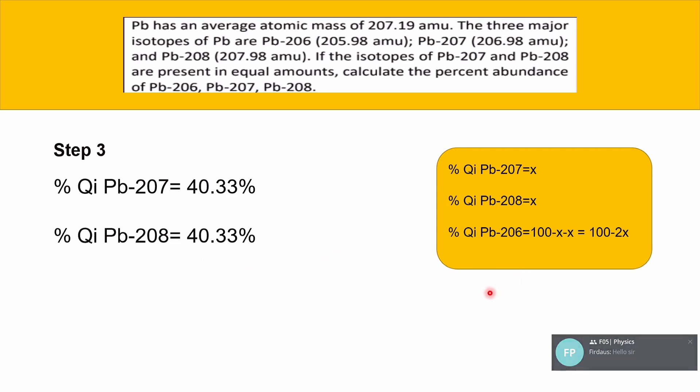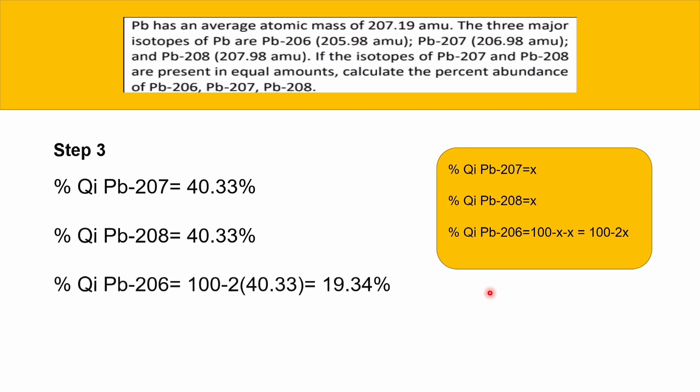To find the isotopic abundance for Pb-206, plug into the formula we set up: 100 minus 2 times 40.33, giving 19.34%. Remember to use percent units for the final answers because we need to find percent abundance.